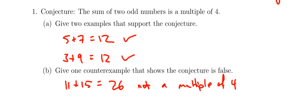And so we know that this conjecture, that the sum of two odd numbers is a multiple of four, we know that that's not always true.